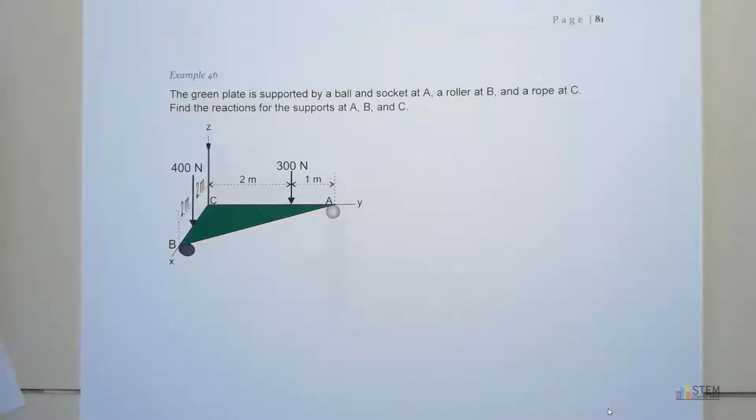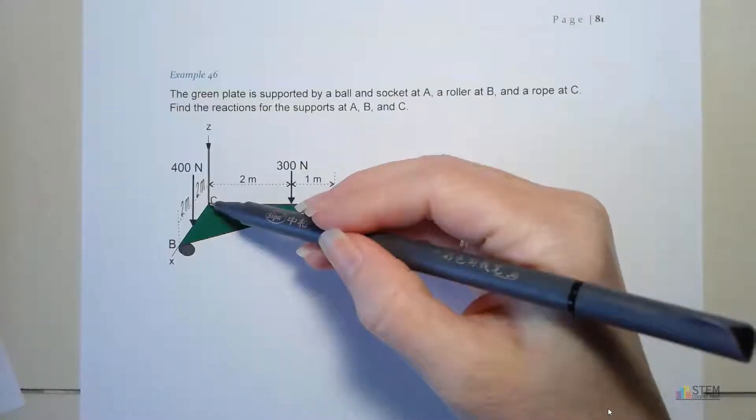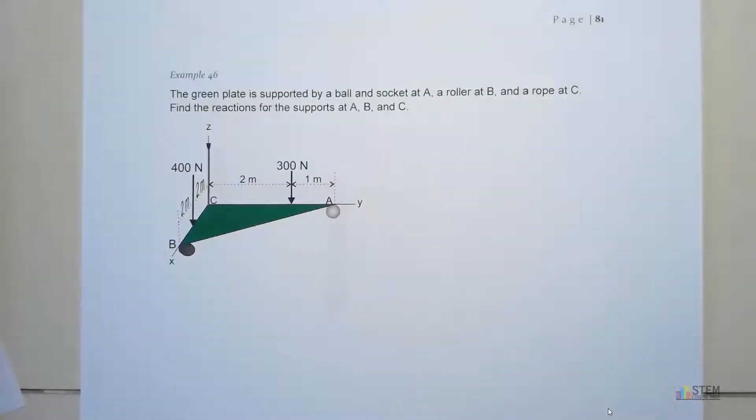We've got a roller at B and then a rope here at C that's attached. We want to find our reactions for the supports at A, B, and C.